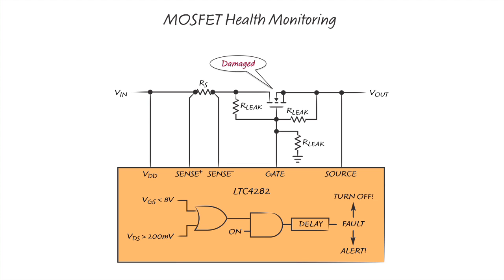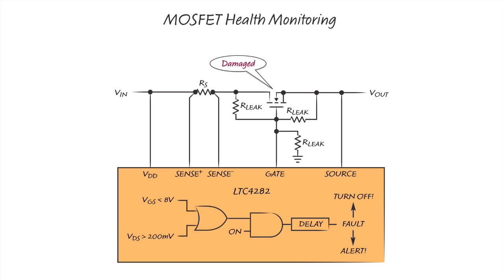To address this problem, the LTC4282 monitors the gate-to-source voltages of the MOSFETs as well as the voltage across the hot swap circuit to ensure that the MOSFETs aren't in a state where they are dissipating too much power. When these situations occur, the LTC4282 waits for a configurable time delay, then automatically turns off and generates alerts.